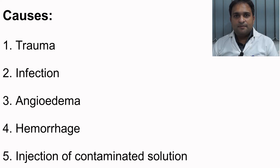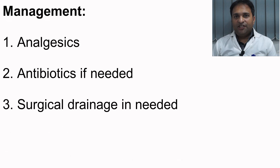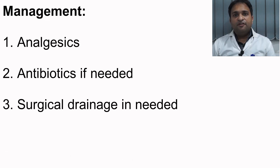Edema due to inferior alveolar nerve block is rare since the introduction of disposable needles and glass cartridges. Causes include trauma, infection, angioedema, hemorrhage, and injection of irritating solutions such as alcohol or cold solutions. Management of minimal edema is analgesia for pain, which will resolve in a few days. If there is a large degree of edema with signs of infection, antibiotics should be prescribed and incision and drainage should be considered.